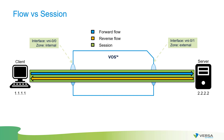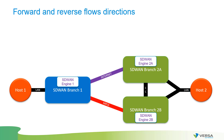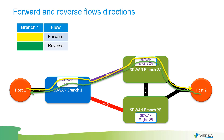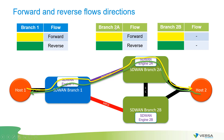How do devices identify forward and reverse flows? Consider host 1 establishing a connection through SD-WAN branch 1, traffic going through SD-WAN engine 1, over the internet to SD-WAN branch 2A, and then to host 2. If host 2's default gateway points to branch 2A, return traffic goes the same way. From branch 1's perspective we see forward and reverse flows. From branch 2A's perspective, the yellow line is forward and green is reverse. Branch 2B sees nothing because branches do not exchange session state in active-active configuration.